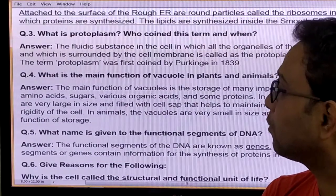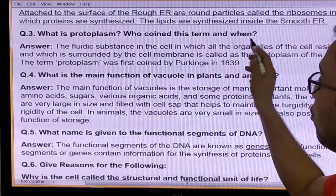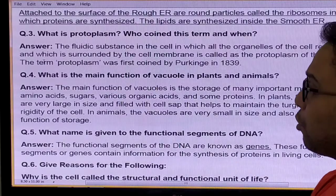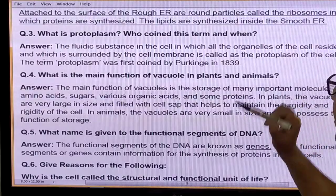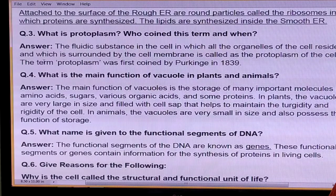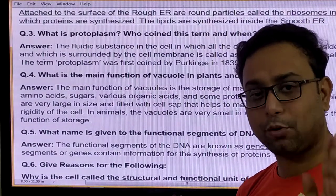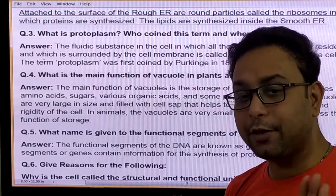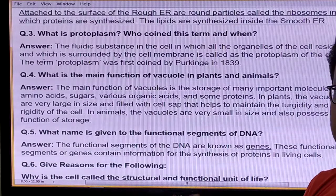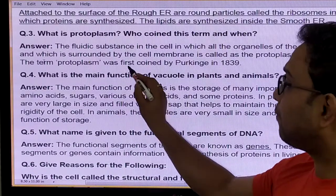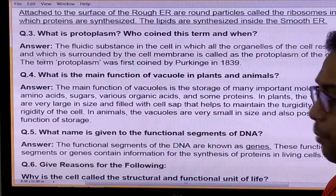Number three: What is protoplasm, and who coined the term and when? Protoplasm is a fluidic substance in the cell in which all the organelles of the cell are ultimately present, surrounded by the cell membrane. In that format, write down the definition of protoplasm. The term protoplasm was first coined by Purkinje in 1839 — very important.